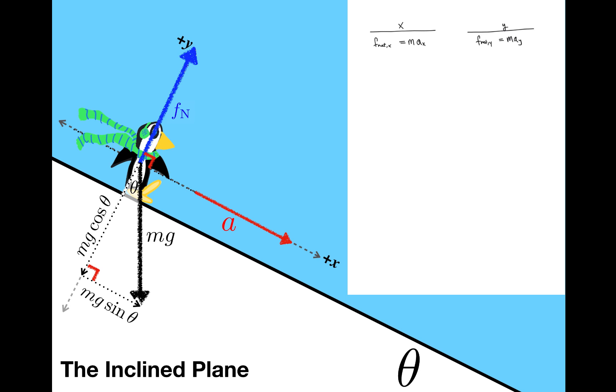Once everything is resolved into components, I'm set to apply Newton's second law. In the x direction, mg sine theta is equal to ma x. In the y direction, fn minus mg cosine theta is equal to ma y. Notice that with this choice of axes, the object's acceleration is going to be entirely along the x axis. So there's no motion at all in the y direction, and the acceleration in the y direction has to be equal to 0.